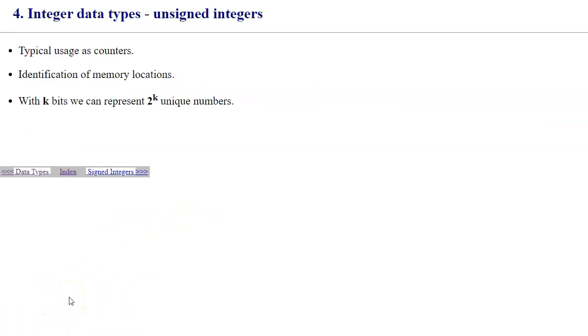Integer data types. We start with unsigned integers and typical usage of them to use them as counters, 0, 1, 2, 3, 4, 5, no negative numbers, but also representation of memory locations or memory addresses. It's also an unsigned integer. There are no negative memory locations. Only positive numbers are used to identify specific places in memory.